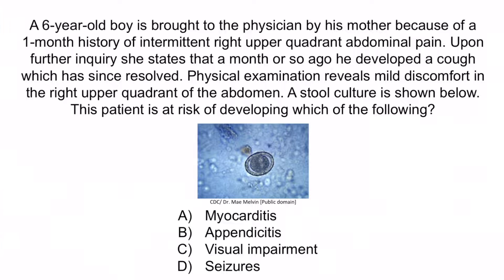A six-year-old boy is brought to the physician by his mother because of a one-month history of intermittent right upper quadrant abdominal pain. She states that a month or so ago he developed a cough, which has since resolved. Physical examination reveals mild discomfort in the right upper quadrant of the abdomen. A stool culture is shown. This patient is at risk of developing which of the following?